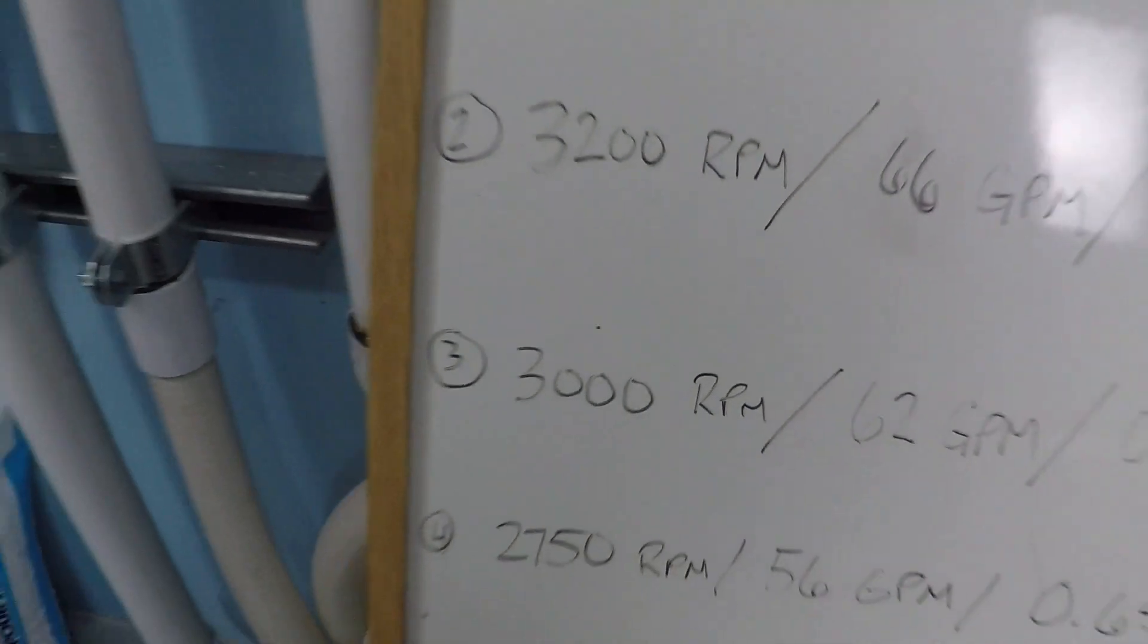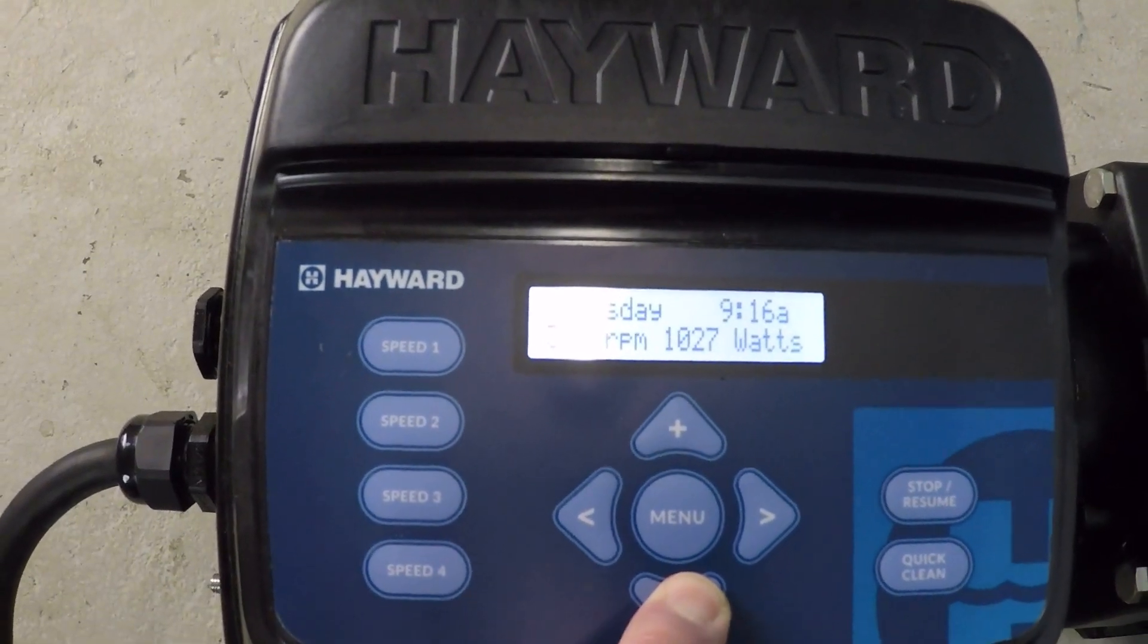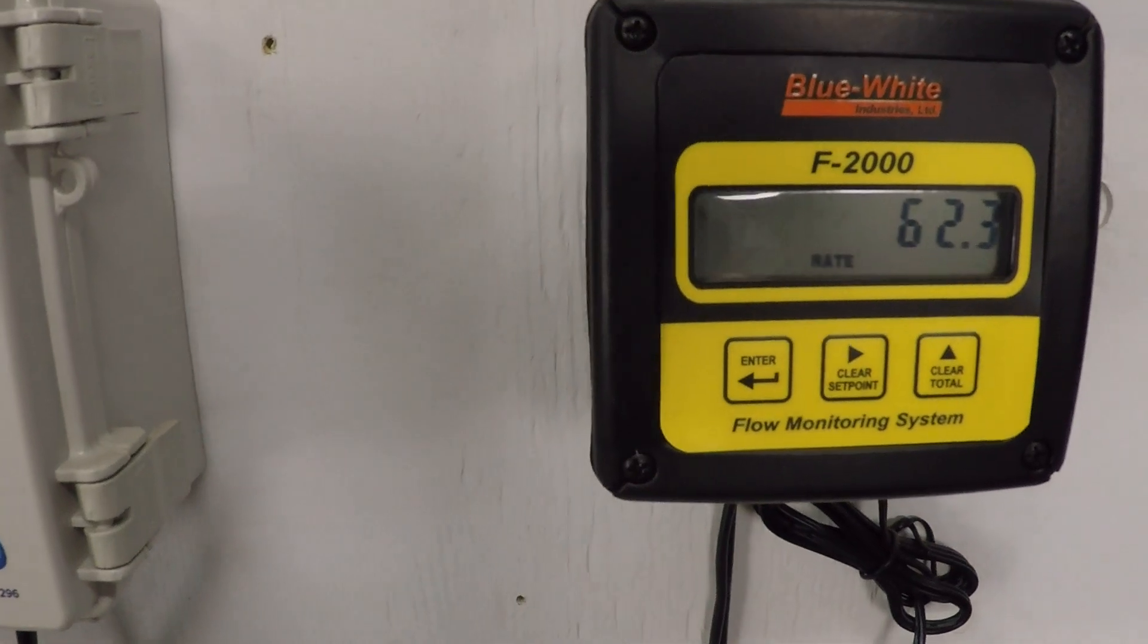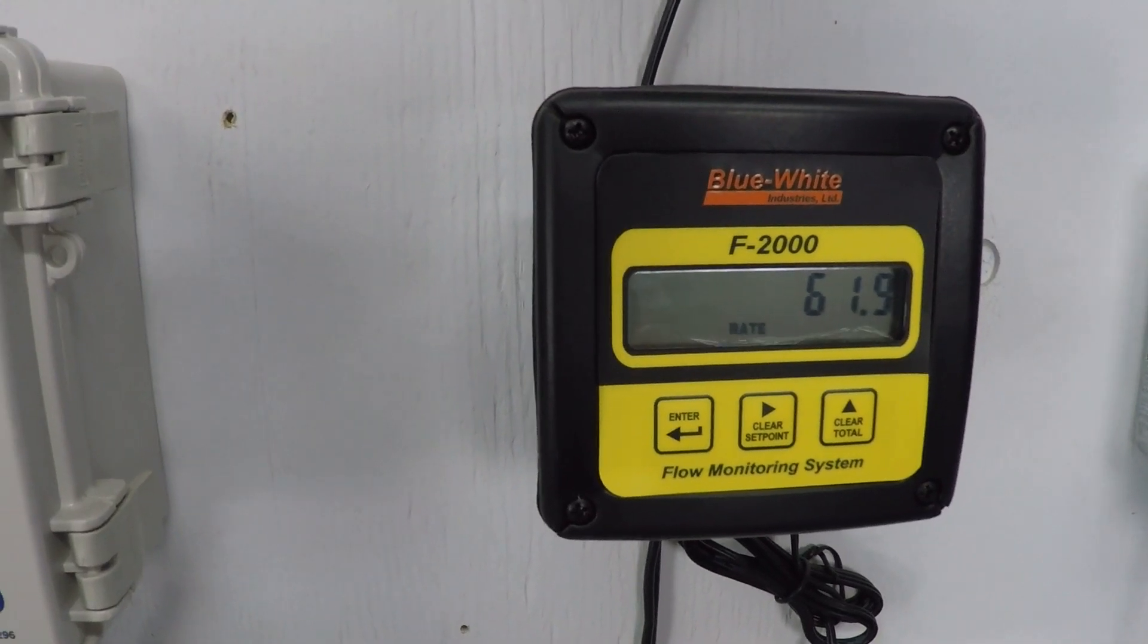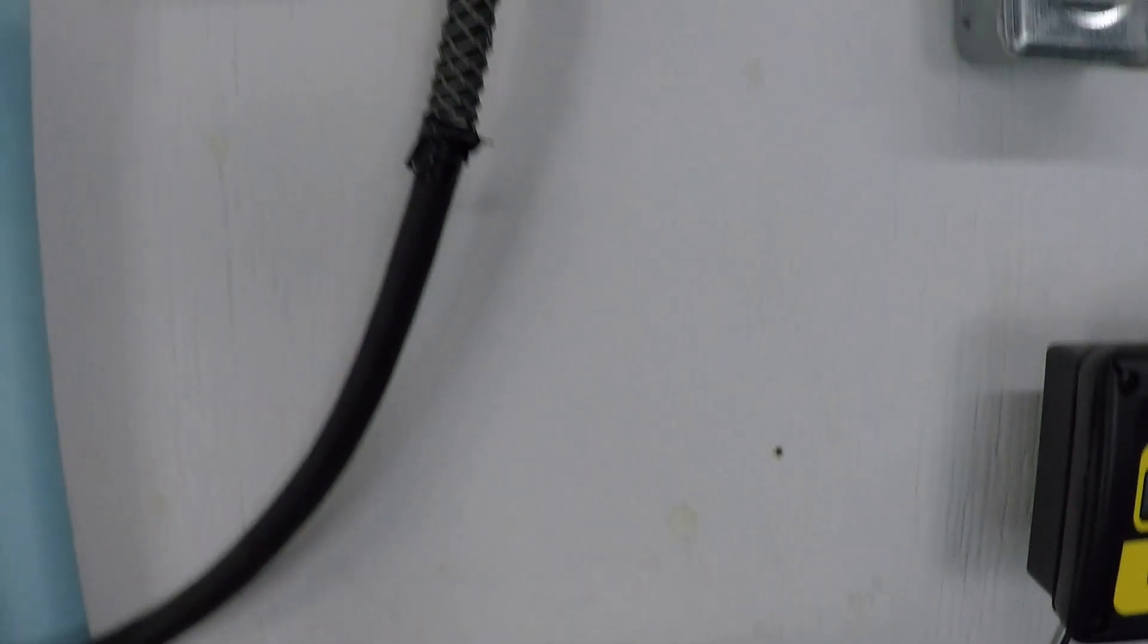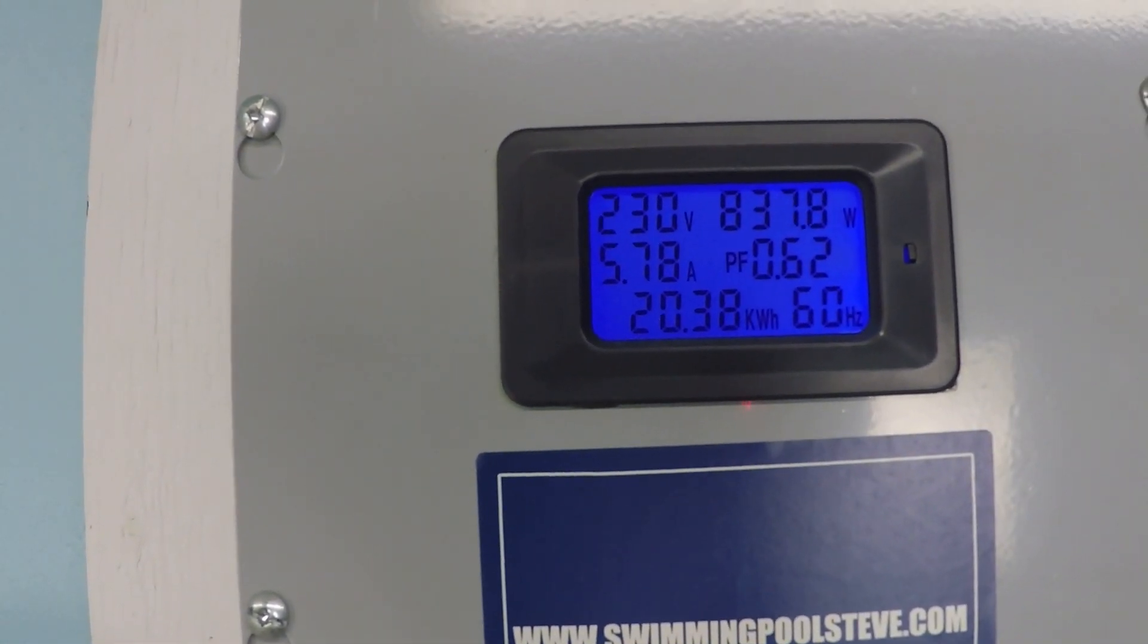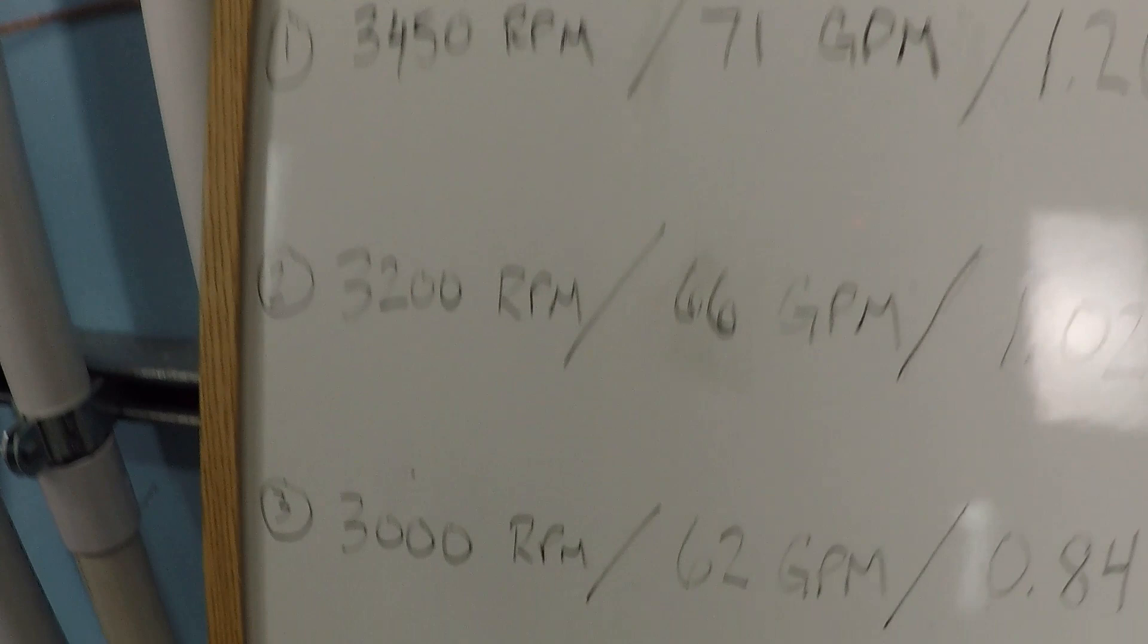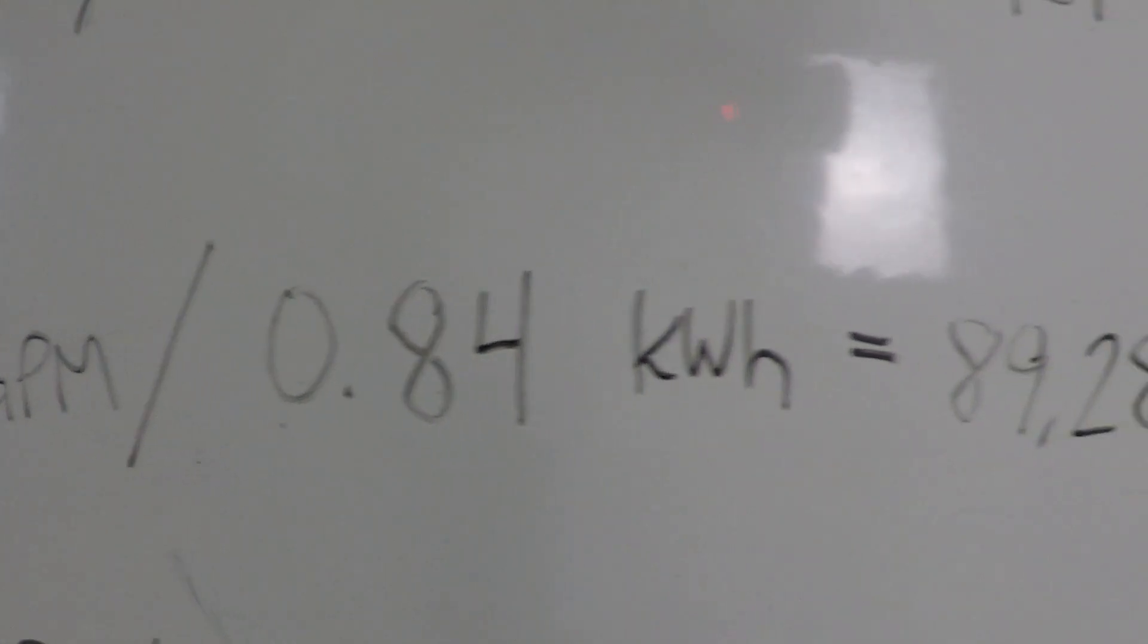So I'm down to 3,000 RPM now. Looking for 62. There it is. It's 838 watts there. 62, it's 840 watts as that's written down there.